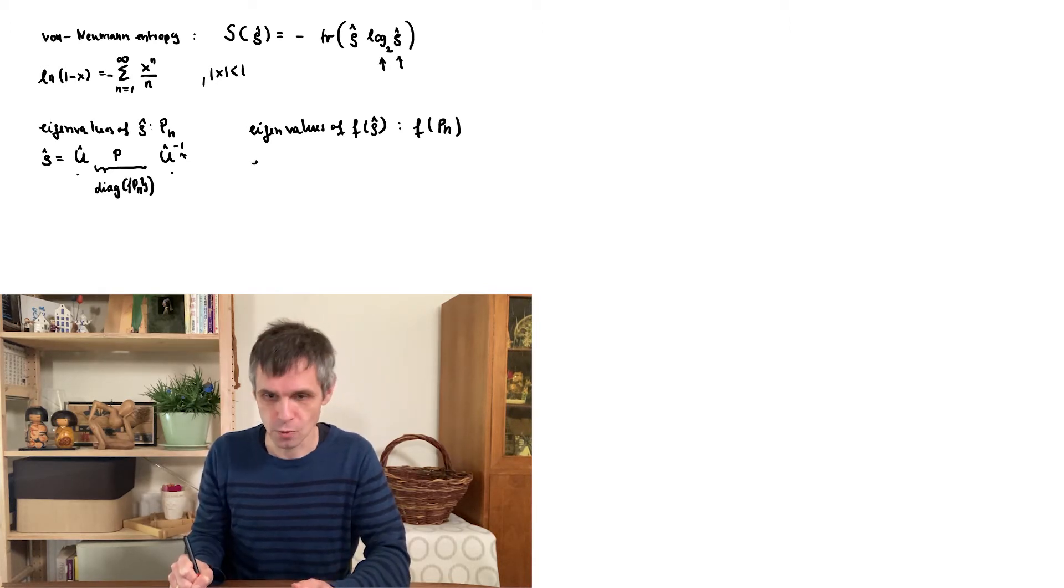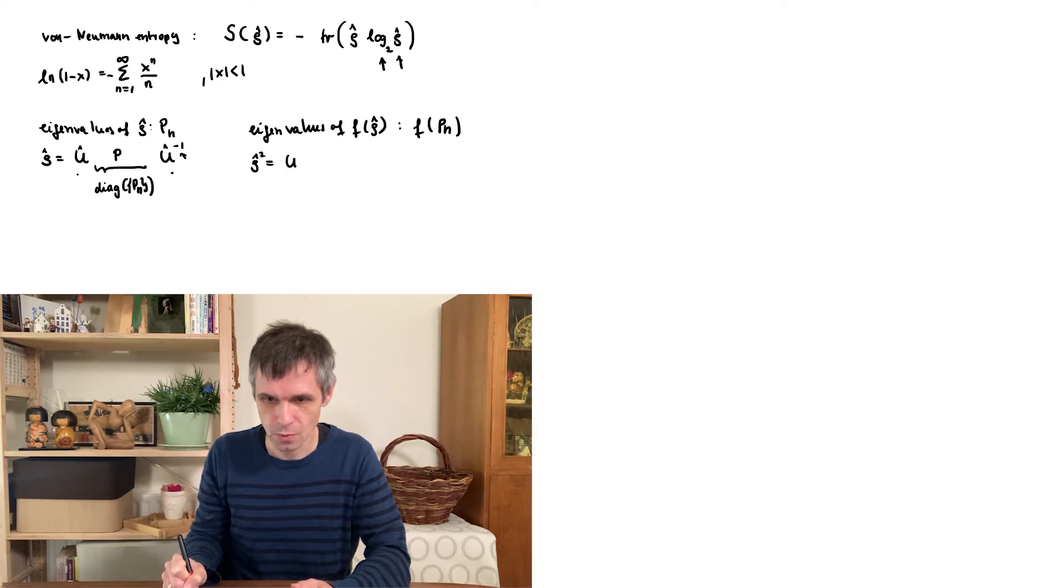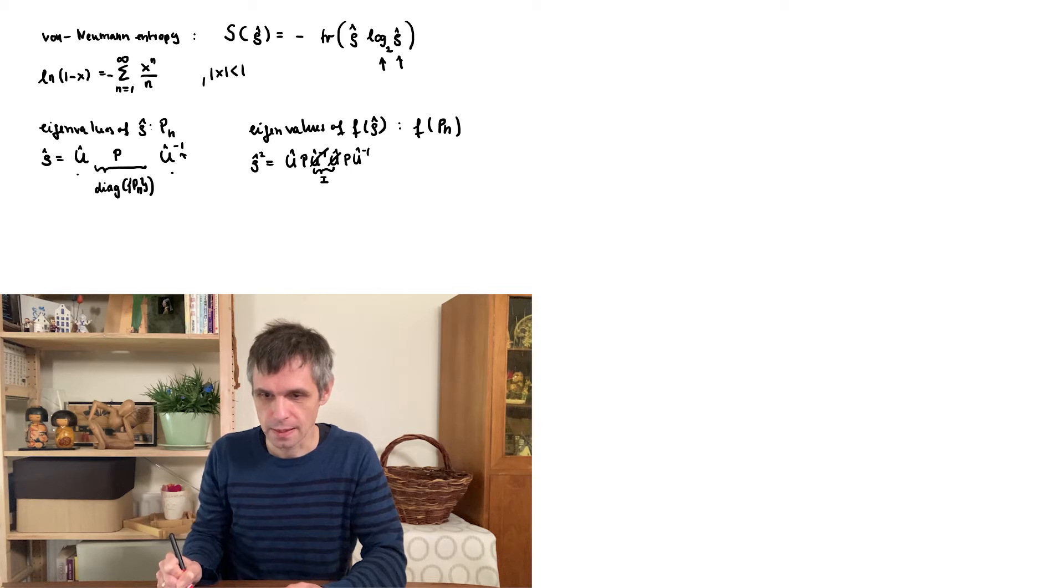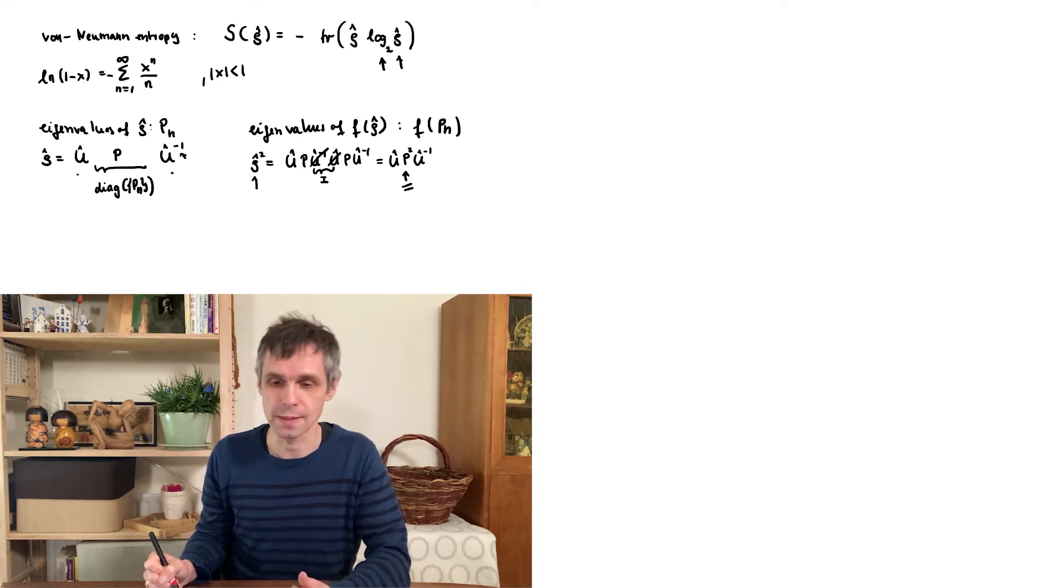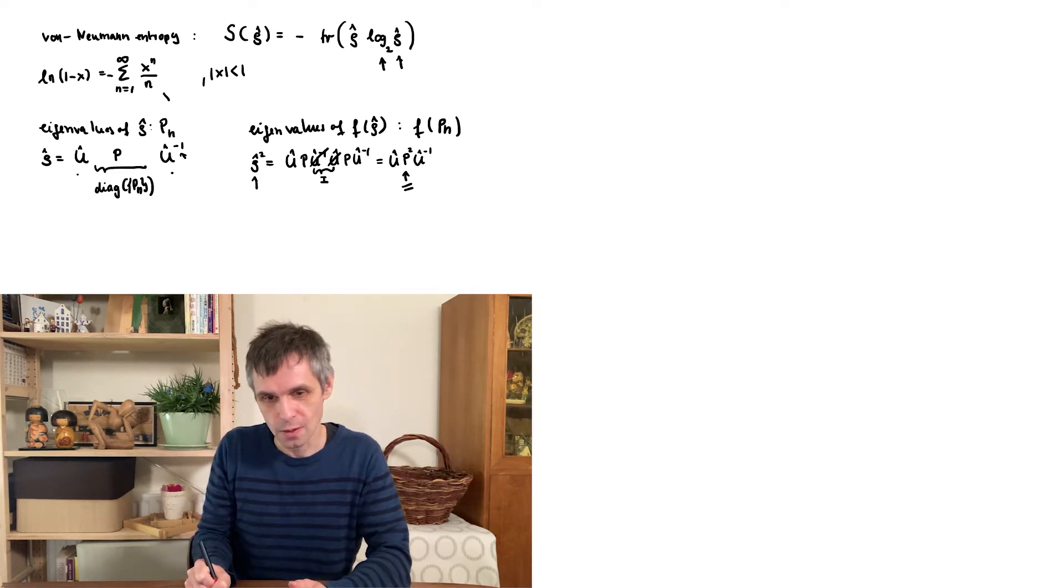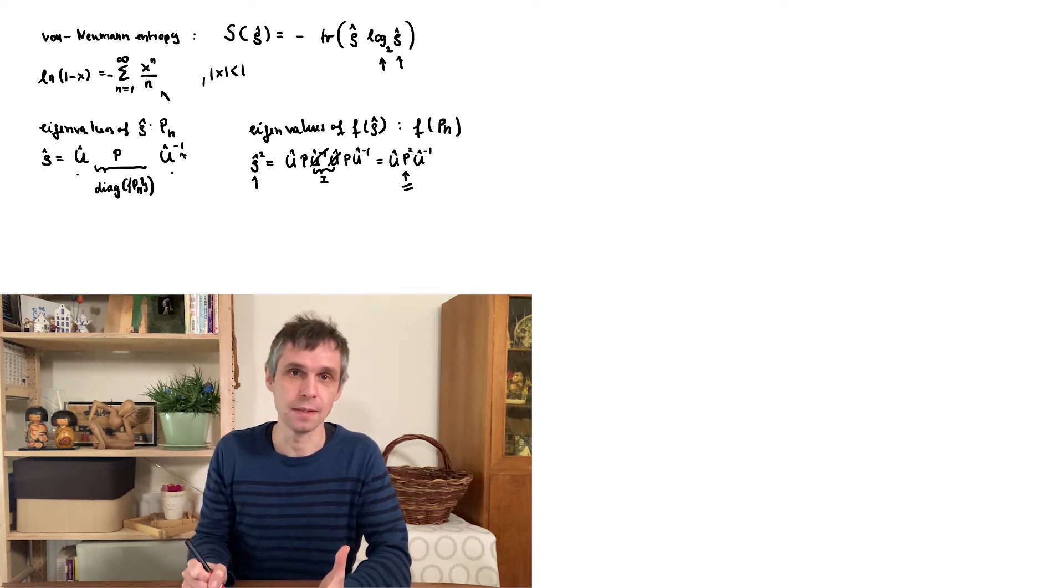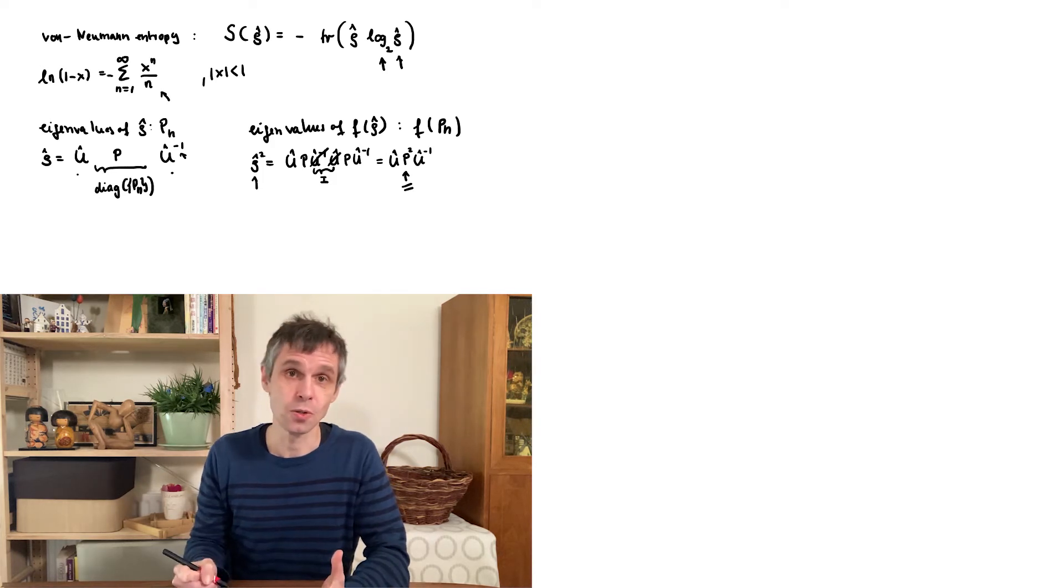So we can write this in the following way. And now when we, for instance, calculate rho squared, we simply obtain U times P times U inverse times U times P times U inverse. These two terms cancel by the definition of an inverse matrix. So we get the identity matrix here. And then we see that this simply becomes the squared of P in the middle. And from this, we conclude that this matrix here has eigenvalues, which are simply the squares of the eigenvalues of the matrix with which we started. And now this simply holds for all the terms here when we stick in the density matrix at these different places. And it also holds when we sum up all the terms.